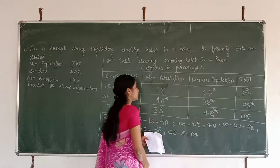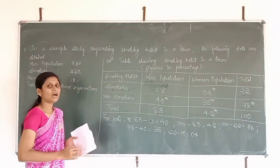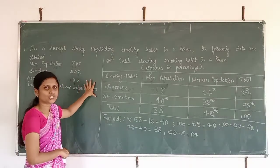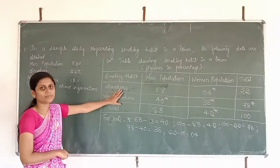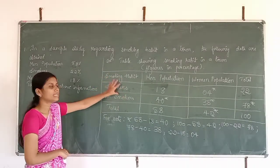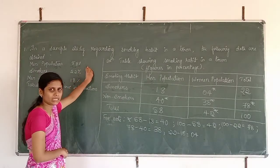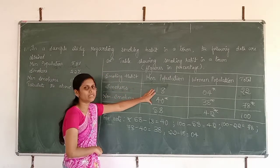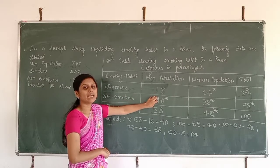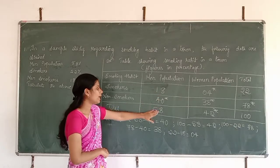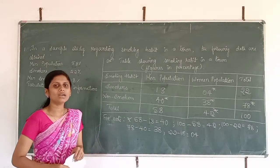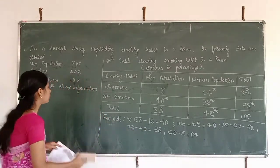To summarize: we draw a table, first write the title, then draw a blank table. Whatever information is given in the question, we fill those cells directly. For the blank cells, we calculate the values using the given information and show those calculations in a footnote.